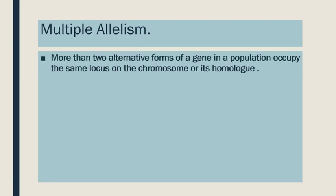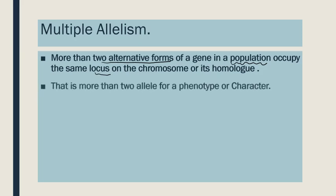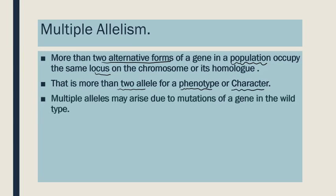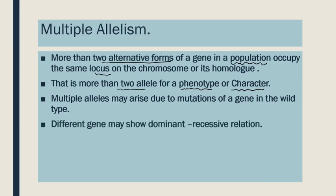So what is multiple allelism? As the name suggests, multiple means many alleles — pair of genes. There are more than two alternative forms of a gene, situated on the same locus on the chromosomes or its homologues. These two or more alleles are responsible for a particular phenotype or character. Multiple alleles may arise due to mutations of a gene in the wild type, causing different combinations of the allelic pair. This combination may show dominant-recessive relationship or co-dominance relationship.